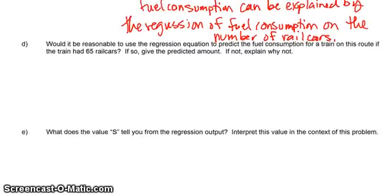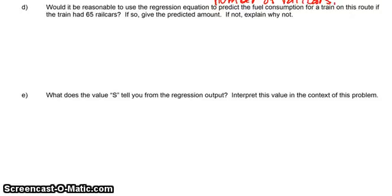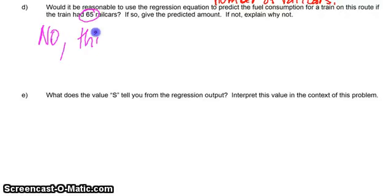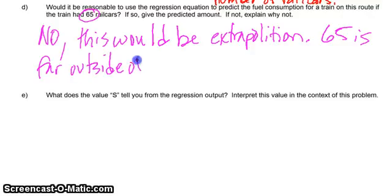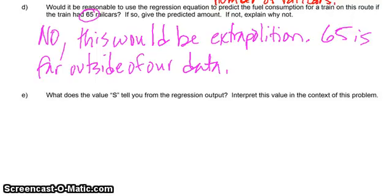Would it be reasonable to use the regression equation to predict the fuel consumption for a train on this route if the train had 65 cars? No. This would be extrapolation. 65 is far outside of our data, so we're not going to do it. Don't forget — extrapolation is bad.